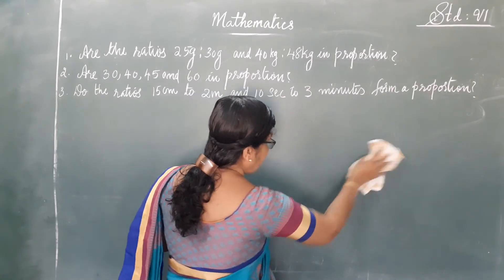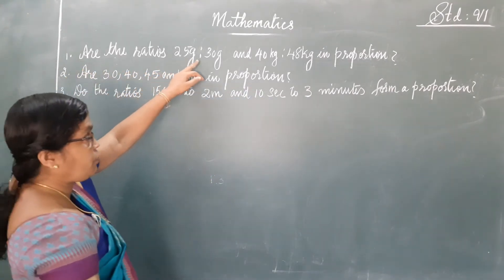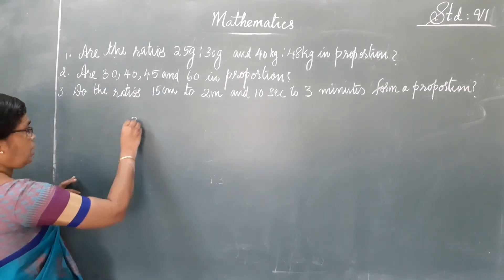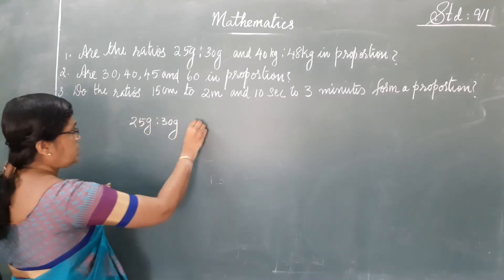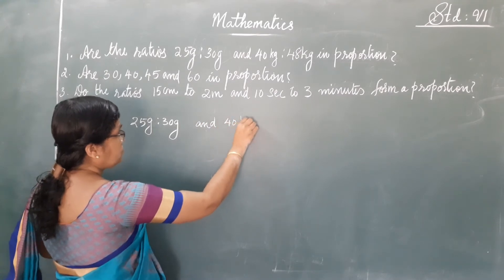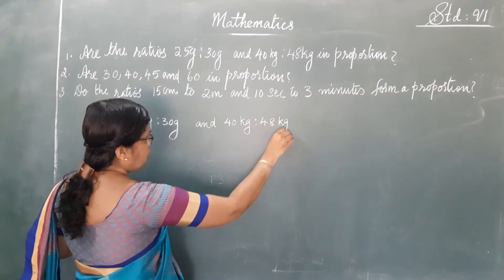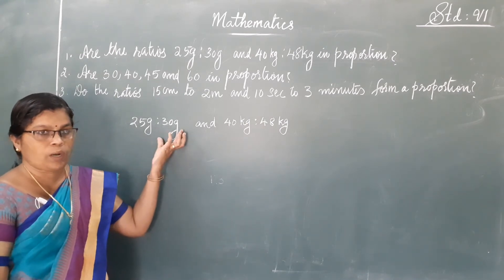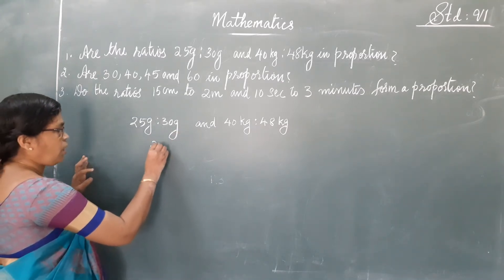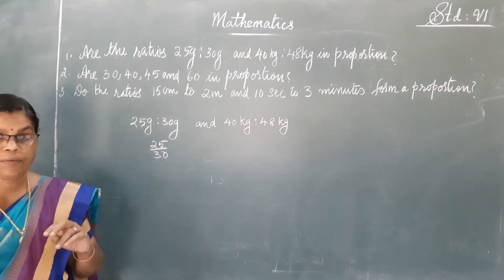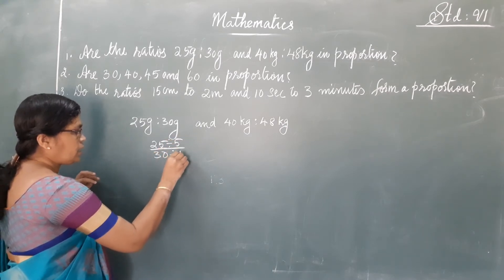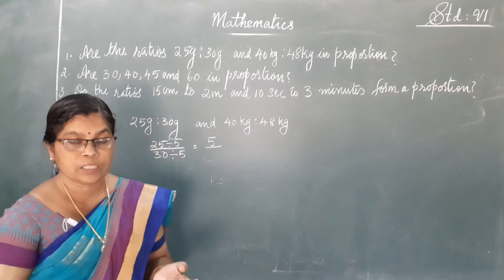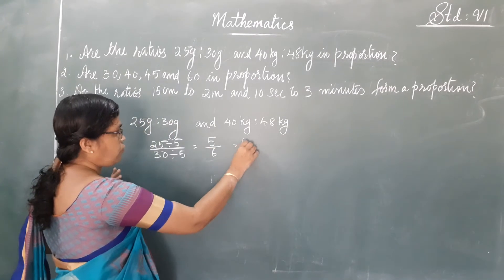Now let us check this question: are 25 gram and 30 gram, and 40 kilogram and 48 kilogram in proportion? Here the quantities are 25 gram is to 30 gram and 40 kilogram is to 48 kilogram. Since both quantities in each ratio are the same unit, we can find the ratio. 25 divided by 30 — dividing by 5 — gives 5 is to 6.